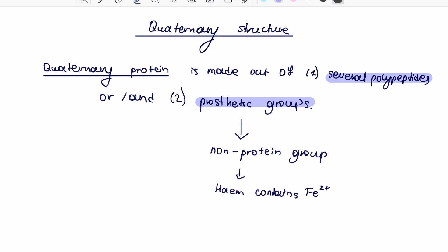So two components, several polypeptides and or prosthetic groups. Let's now go and look at the real examples of proteins that have quaternary structure.